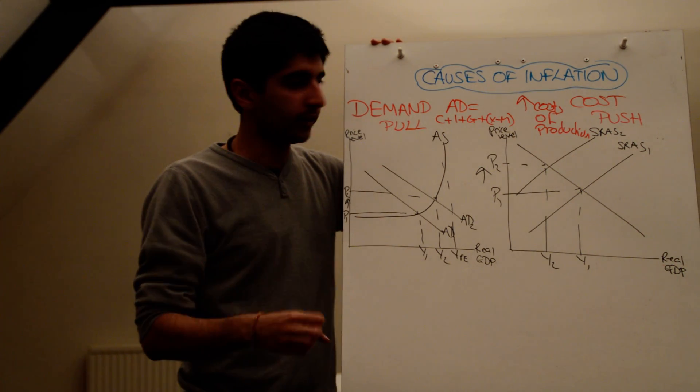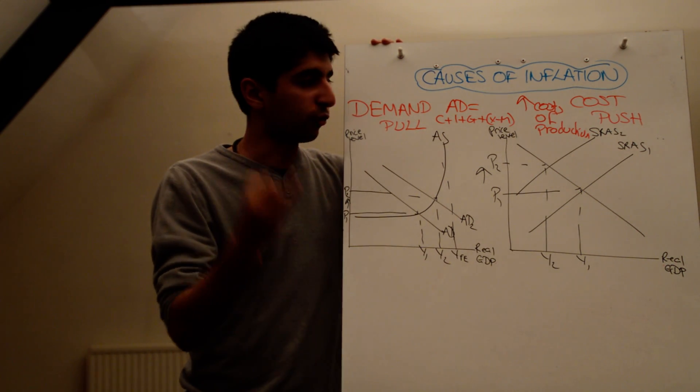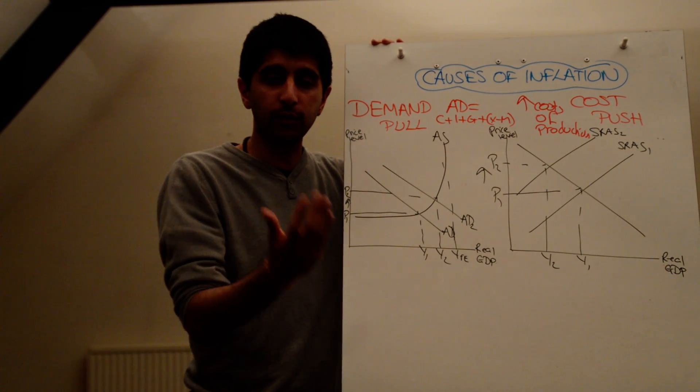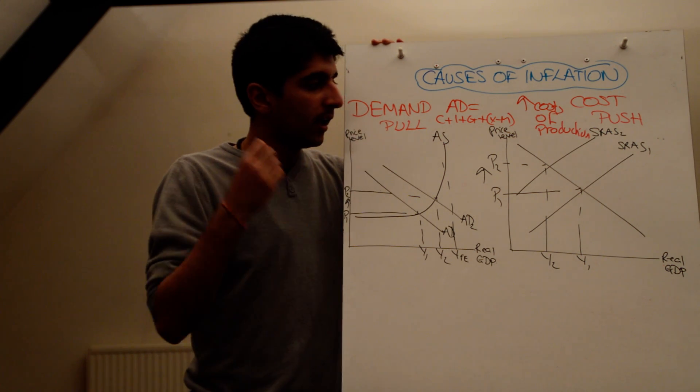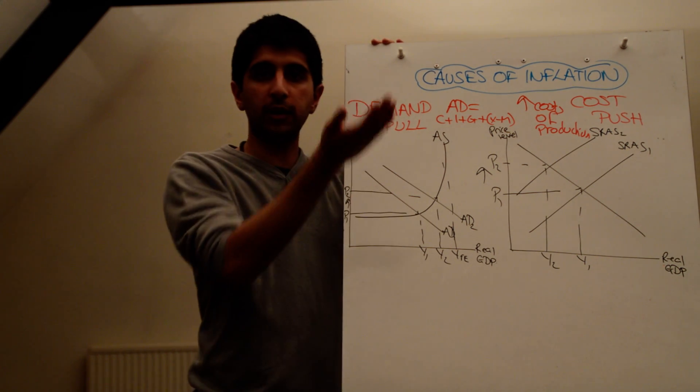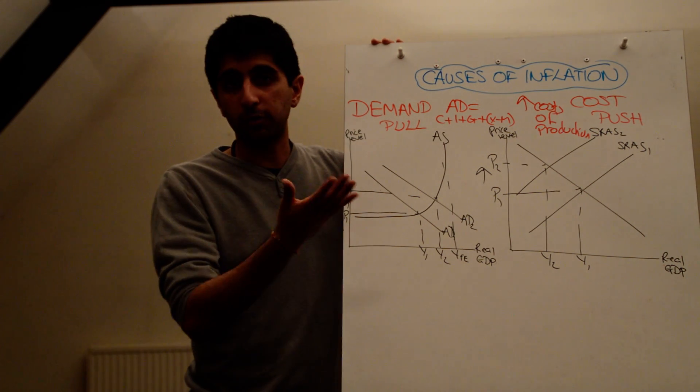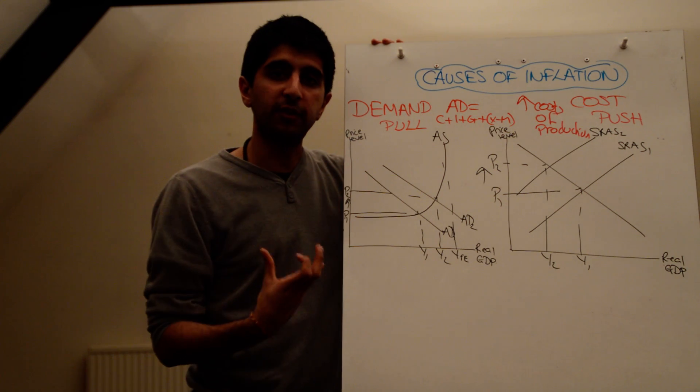So just quickly run through this again. So it could be an increase in the price of raw materials, so an increase in the price of commodities, which increases cost of production. An increase in business taxes, an increase in cost of production like VAT. An increase in wages, which increases cost of production. And import prices increasing, which then increases cost of production for firms who import raw materials.